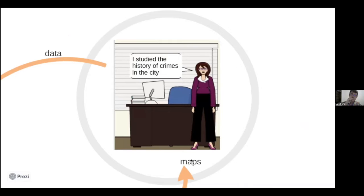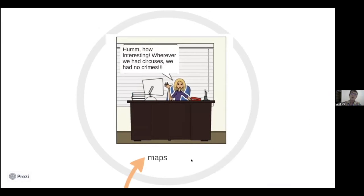Up to now, the platform is being enriched with different data from different researchers who are not linked to each other. And let's imagine a third researcher who says, how interesting — wherever we had circuses, we had no crimes. This is schematic and very theoretical, but the important thing is that she is not uploading anything to the platform; she is using it as a kind of meta-source for researchers.